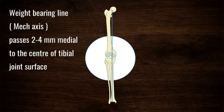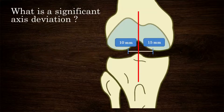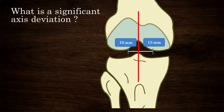The mechanical axis of the entire lower limb, also called McCulloch's line, runs from the center of the femoral head to the center of the ankle joint. Under physiological conditions this line runs on average 4 mm medial to the center of the knee joint. When this line is displaced more than 10 mm laterally or more than 15 mm medially, it is called a significant mechanical axis deviation.